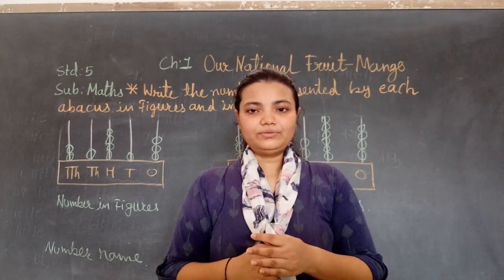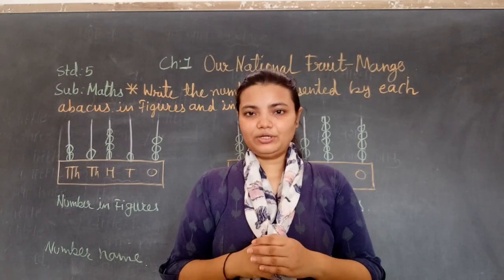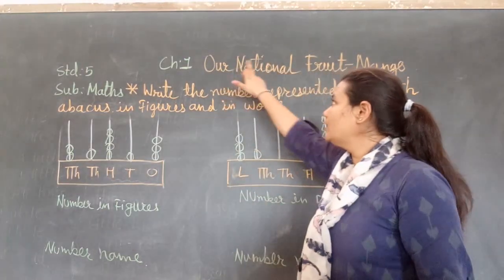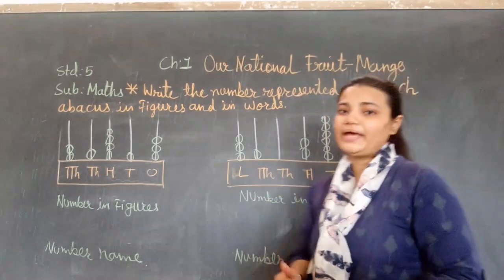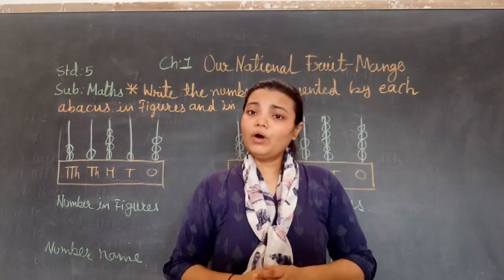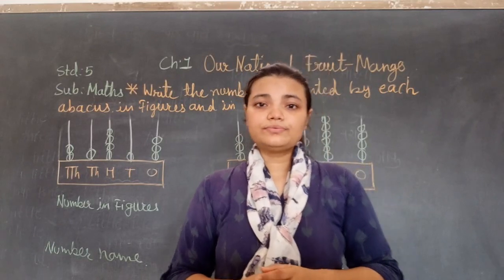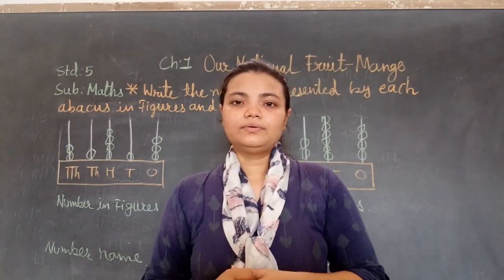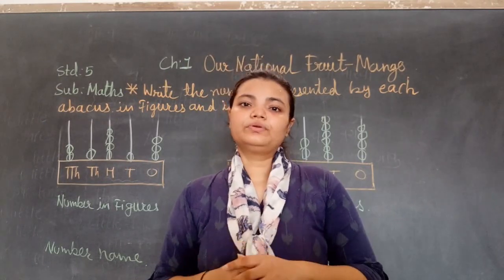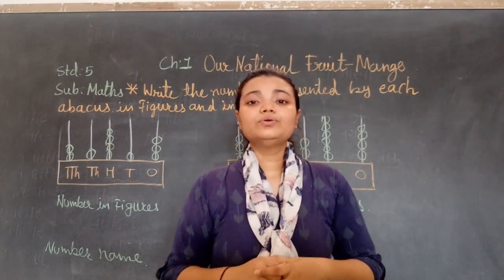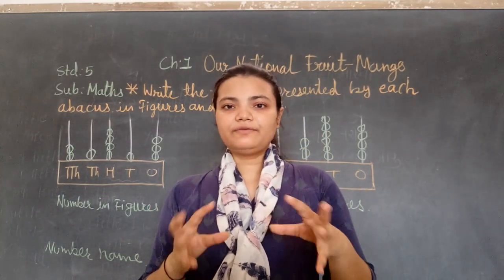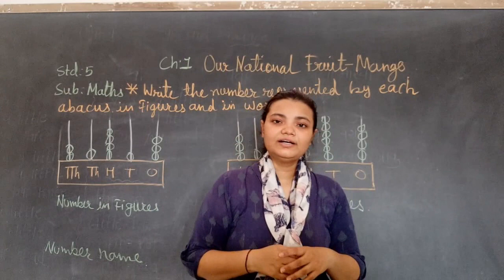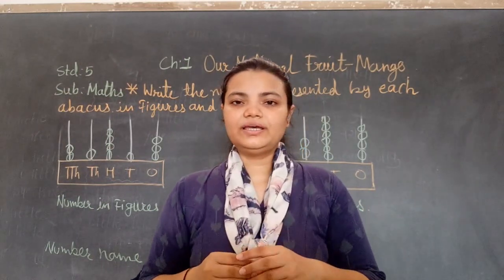I am going to take Maths Chapter 1 and the name of the chapter is 'Our National Fruit.' So there are many fruits, but among all of them, Mango is the National fruit. Mango is a very loving fruit and its color is yellow. Some are green — it is good.